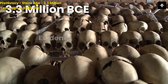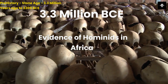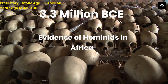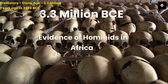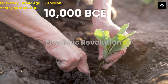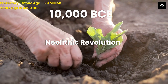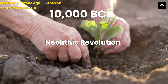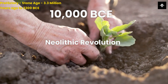The first major event of the Stone Age is the earliest known evidence of hominids, Australopithecus afarensis, found in Africa approximately 3.3 million BCE. The second major event of the Stone Age is the beginning of the Neolithic Revolution, a period when humans began to transition from hunting and gathering to agriculture and settlement, which happened almost 10,000 BCE.